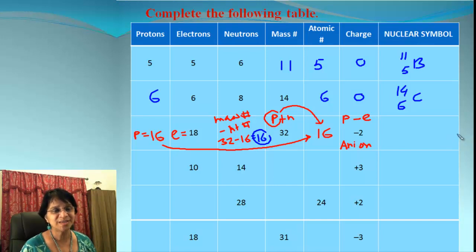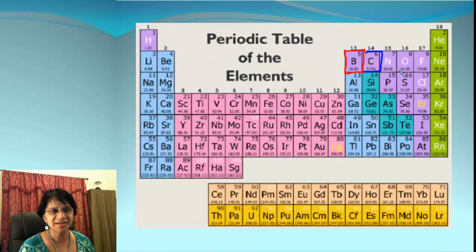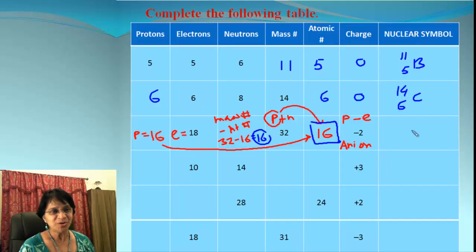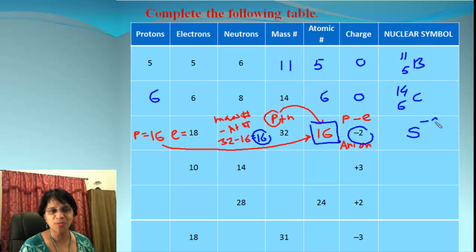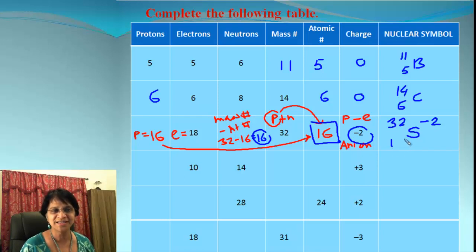Going to the periodic table, atomic number 16 is sulfur, symbol S. The charge is negative 2, so that goes in the right-hand side top corner. The atomic mass number is 32 and atomic number is 16. That is the nuclear symbol for the sulfide ion.